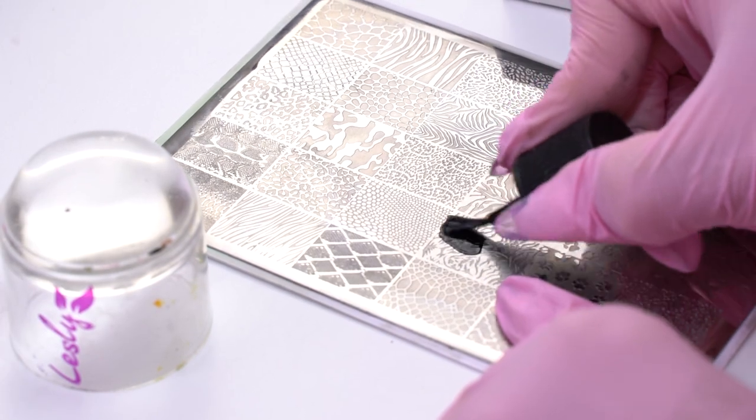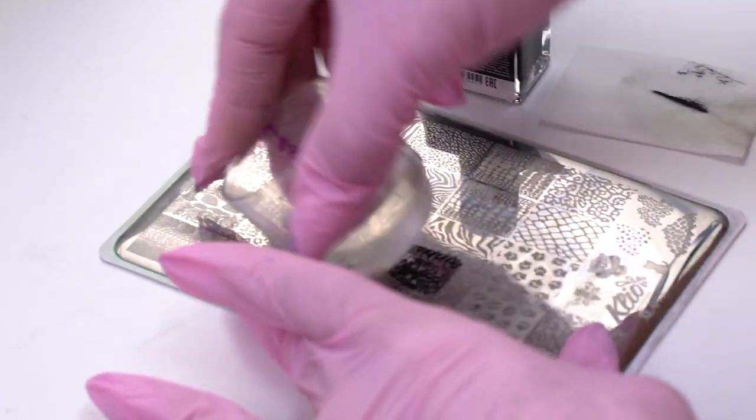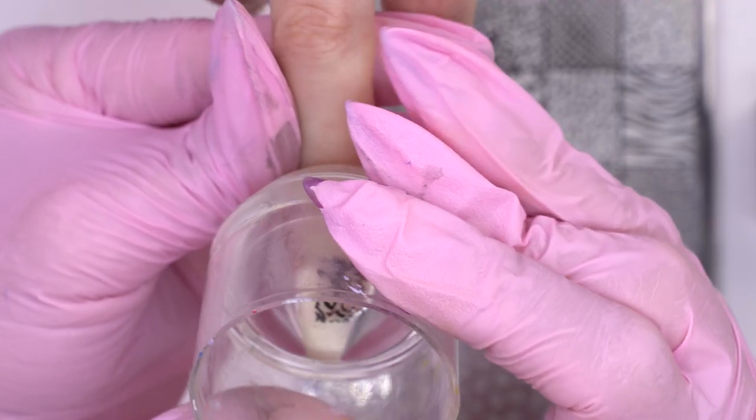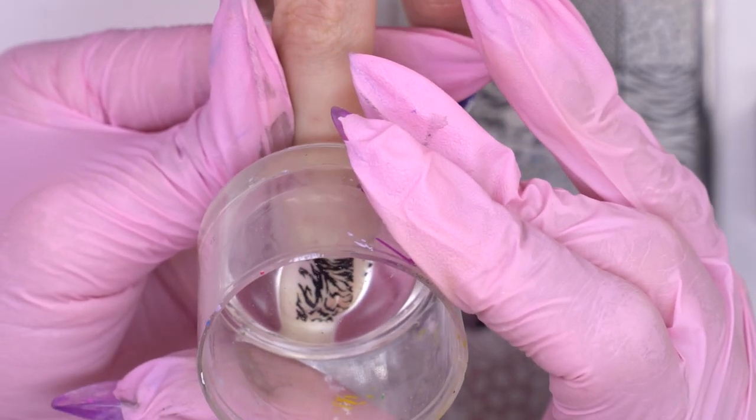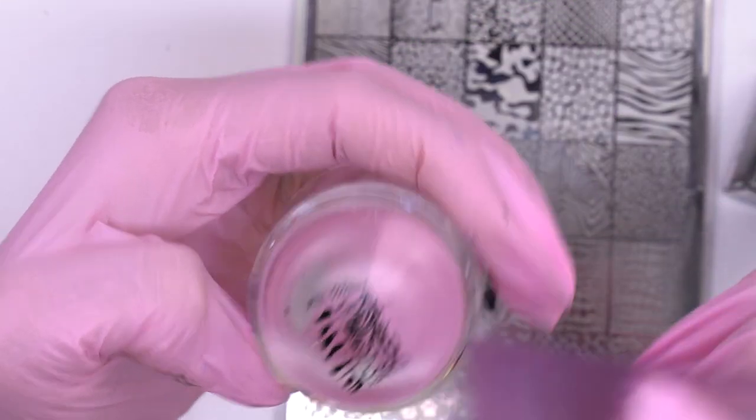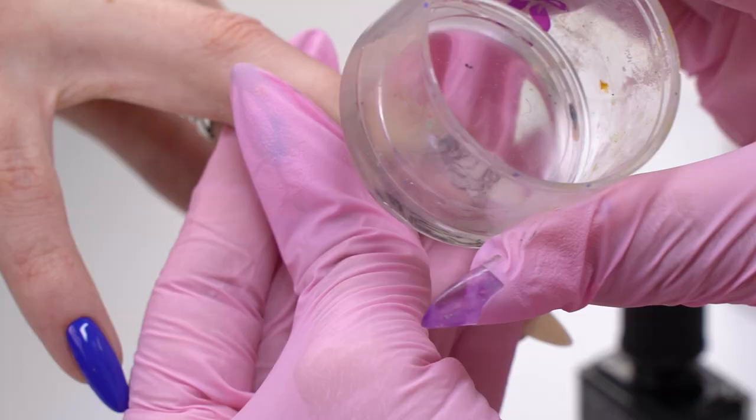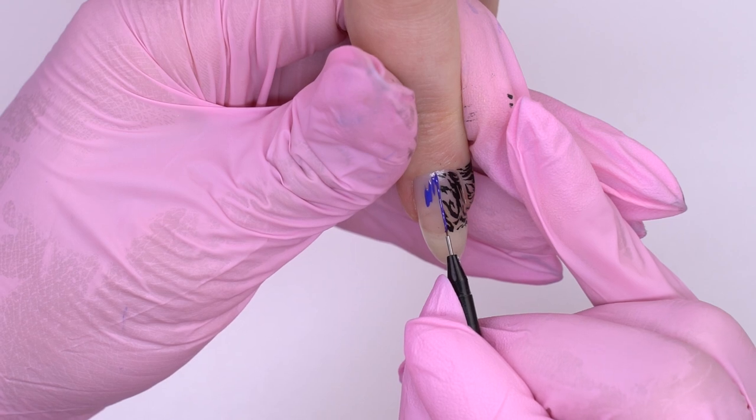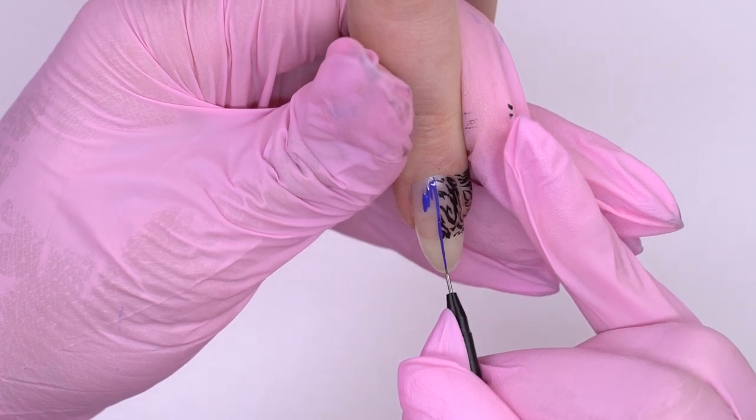I want to add stamping on the middle and ring nails, imitating a tiger's fur, just in time for the year coming. I outline the borders and then fill in this area in one layer.